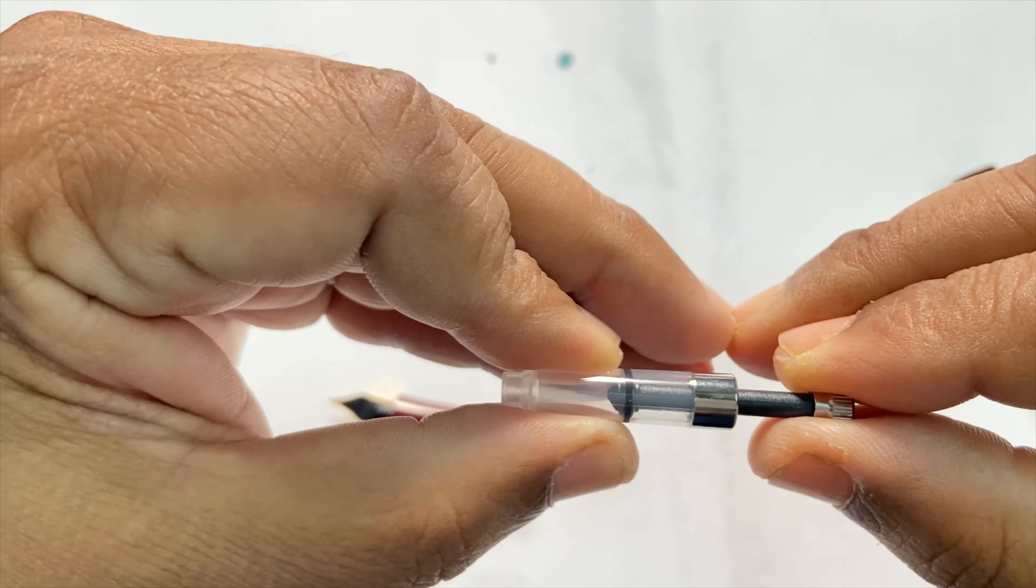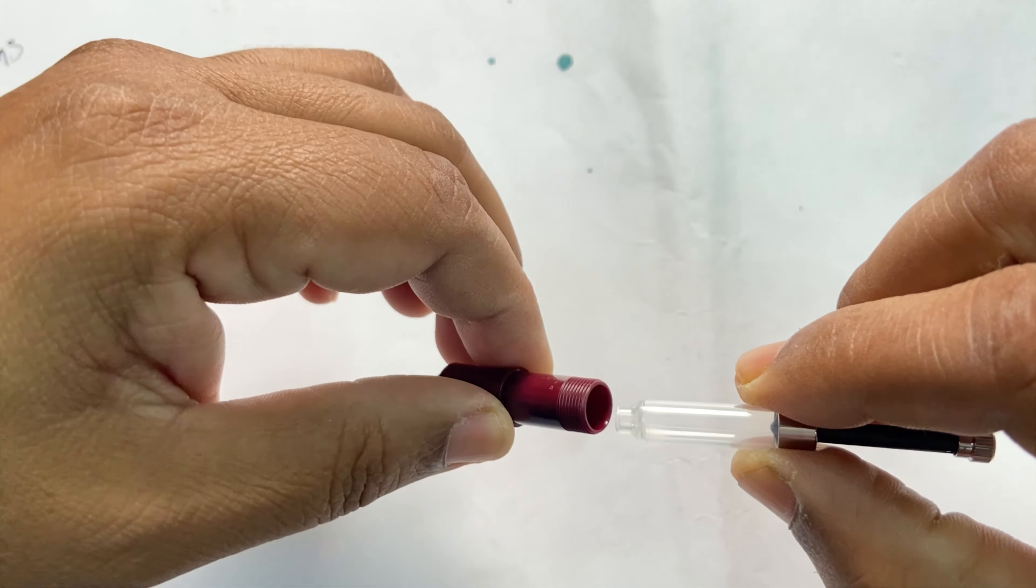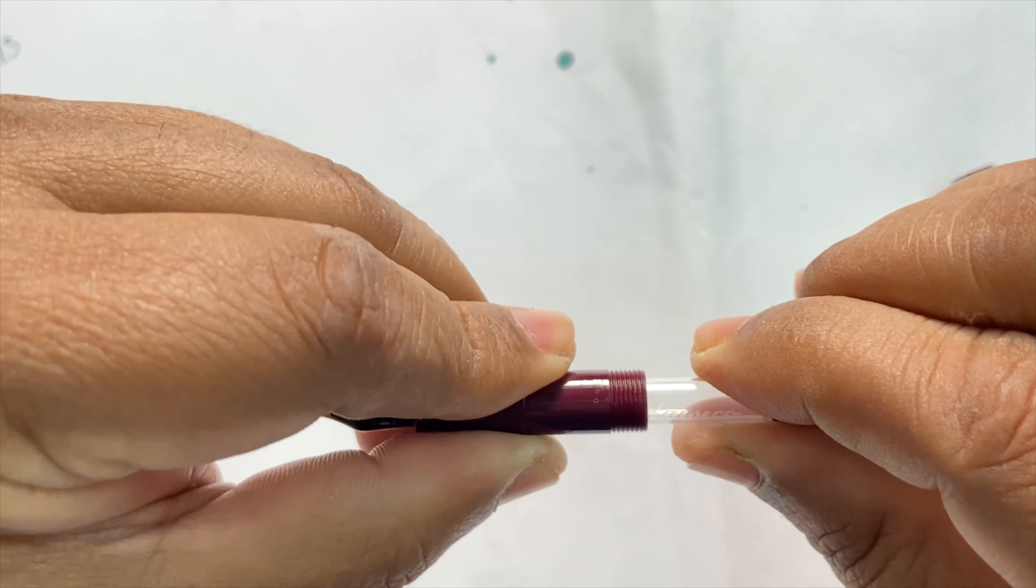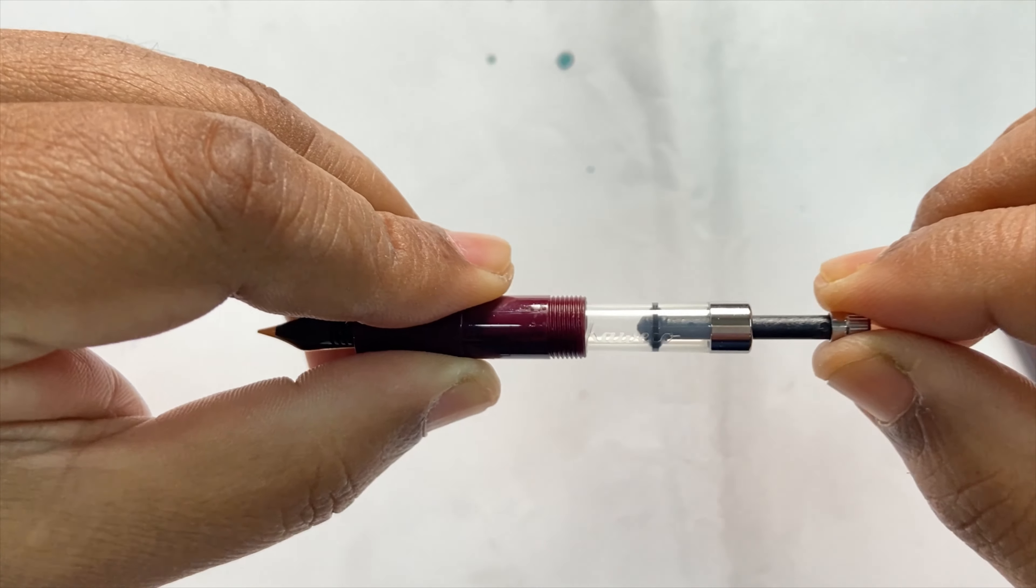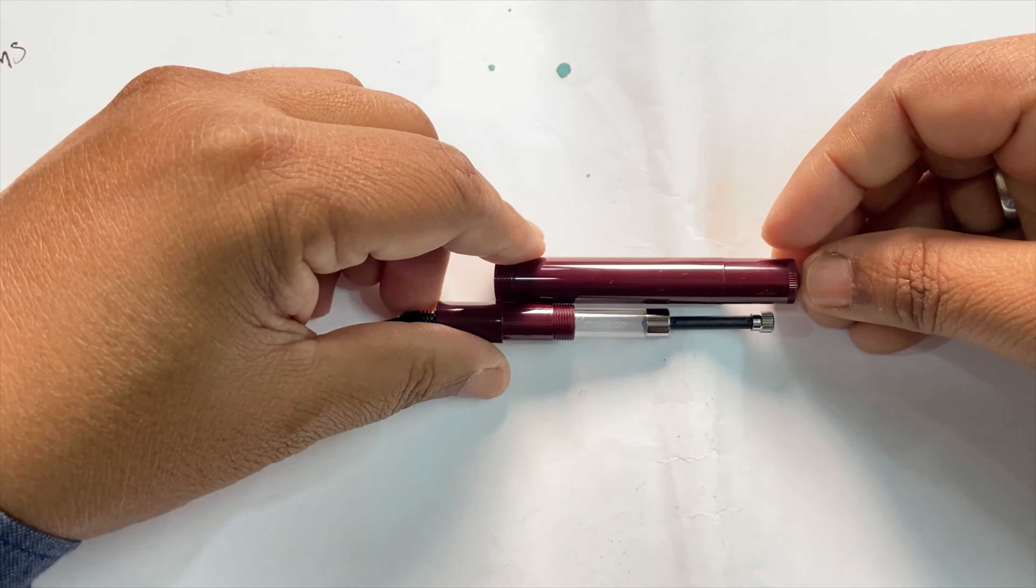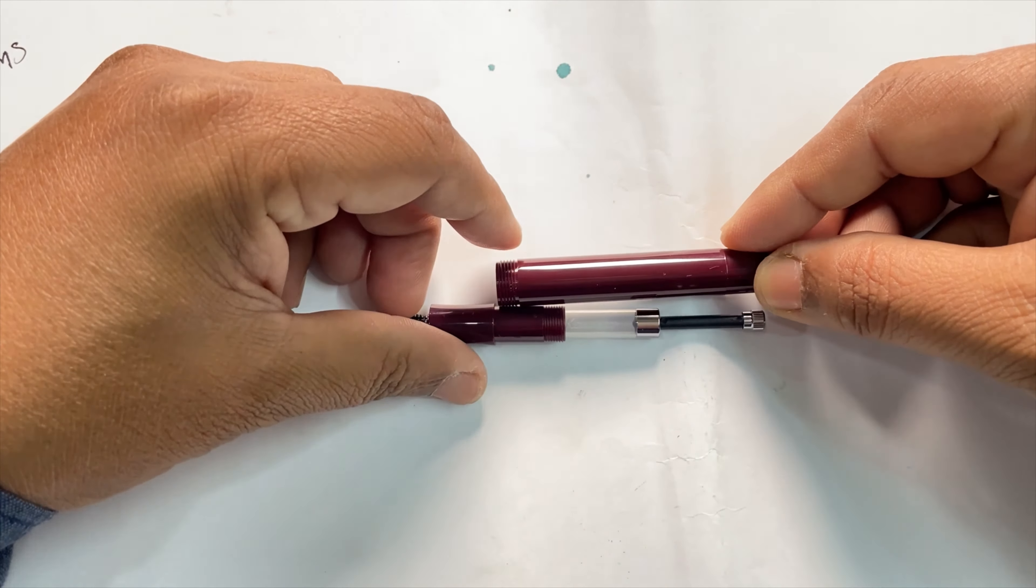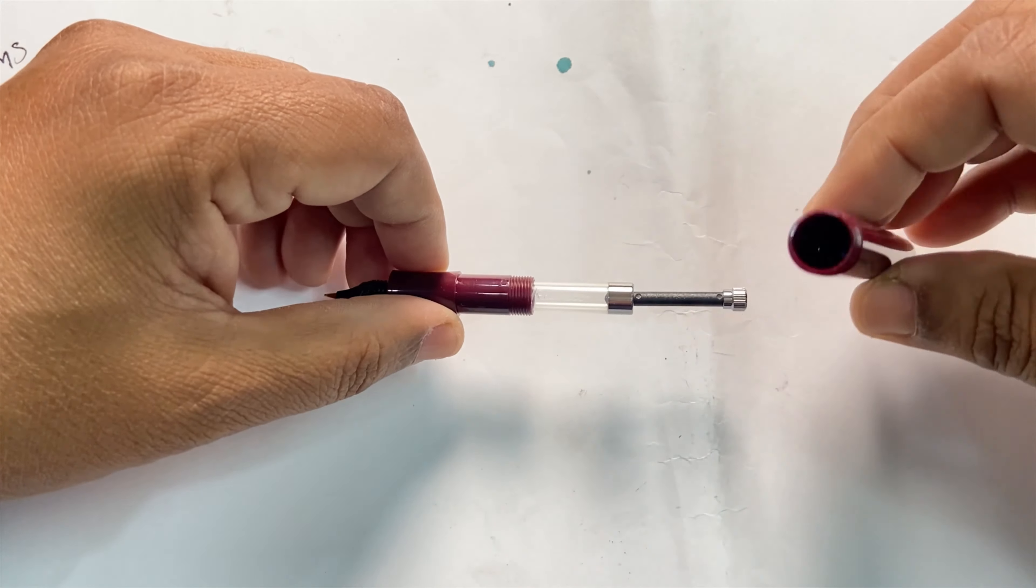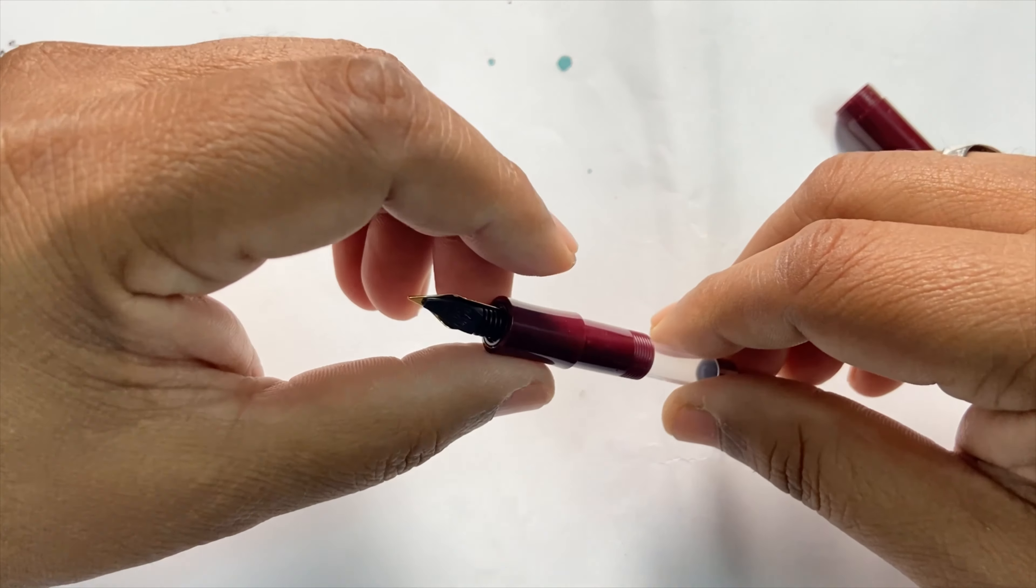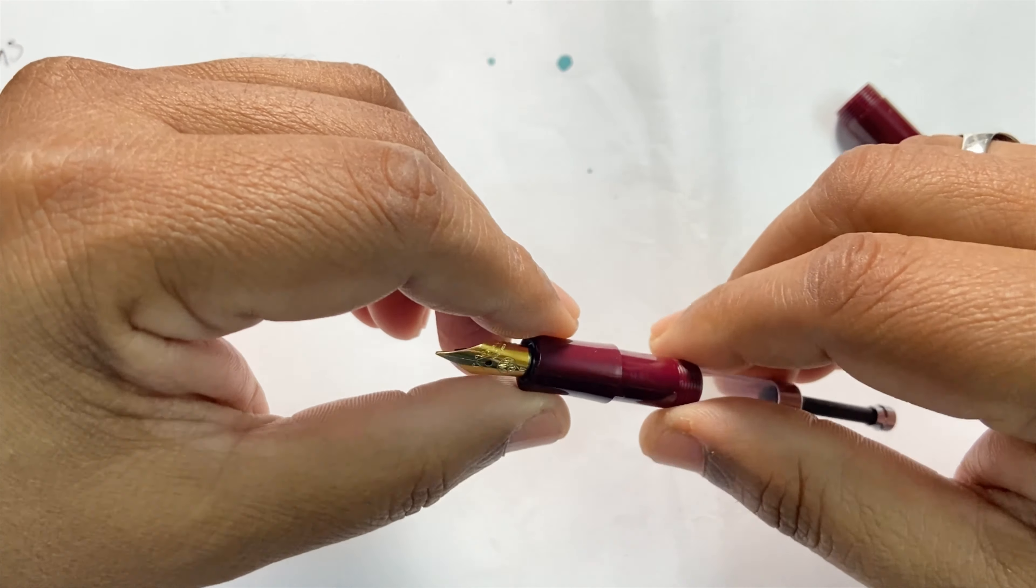These are, as you can see friends, pretty miniature converters. And this is friction fit. In fact, as you can see, the converter as well as the piston is made to fit almost snug with the barrel. The barrel is plain plastic, so I'll be filling up this pen and taking a writing sample before the camera.